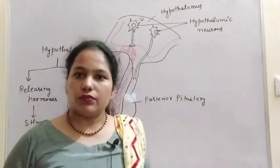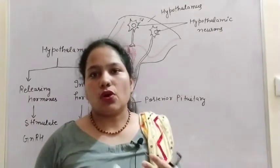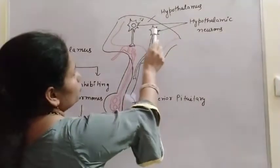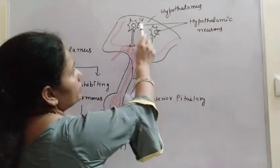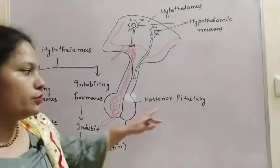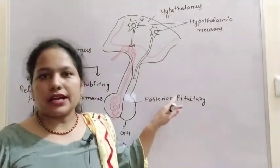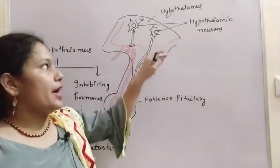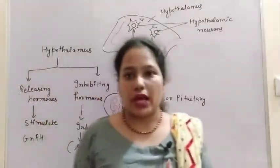The hypothalamus gland has cells known as neurosecretory cells, or nuclei. These are the neurons of the hypothalamus which directly transport their hormones through those neurons to the posterior pituitary. So we can say the posterior pituitary is directly connected with the hypothalamus through neurons, and these neurosecretory cells are known as the nuclei of the hypothalamus.